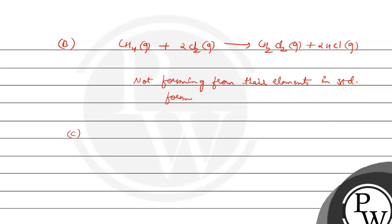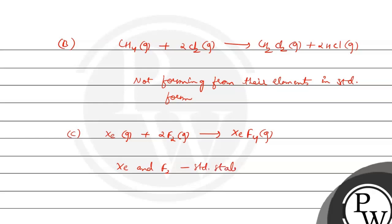Option C: Xe gas plus 2F₂ gas gives XeF₄ gas. Here, Xe and F₂ are in their standard states or standard form. These two elements are in their standard form to form the XeF₄ product. So this reaction is the correct option.